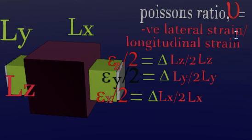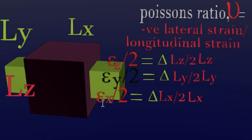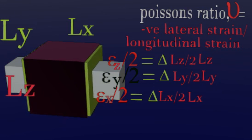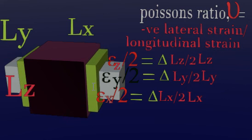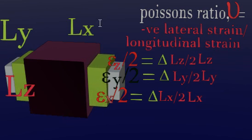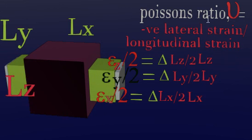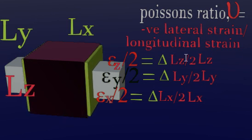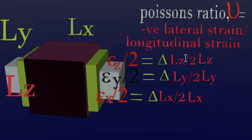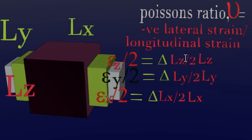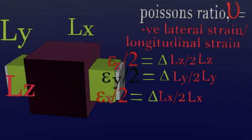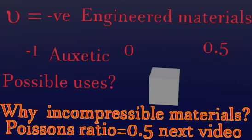Because the normal material is shortening in the lateral directions, and if shortening is negative, then you have a negative value over a negative value in the formula, which gives a positive Poisson's ratio. So for normal cases where there is axial elongation and lateral shortening, the Poisson's ratio is always positive by definition. For auxetic materials this is not the case.